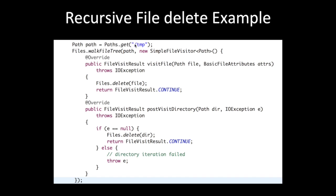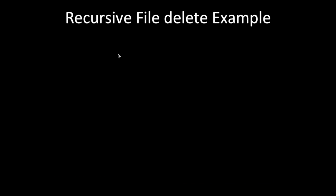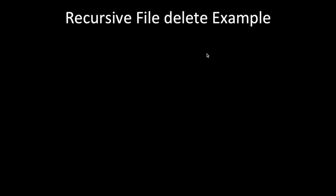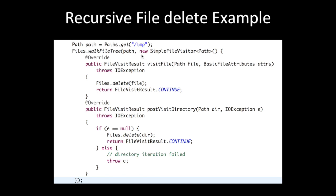Here is an example of recursive file delete. First we get the path API starting at temp. We use Files.walkFileTree(), which takes a path and accepts a FileVisitor — in this case a SimpleFileVisitor. It has callback methods: visitFile and postVisitDirectory. If the entry is a directory, we return FileVisitResult.CONTINUE in postVisitDirectory. If visiting a file, we delete it, then return the appropriate result. For a directory, we delete the directory and continue.